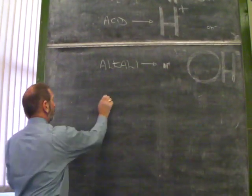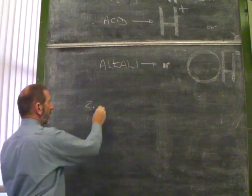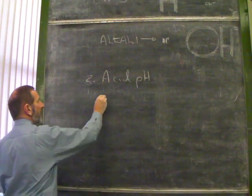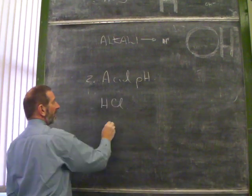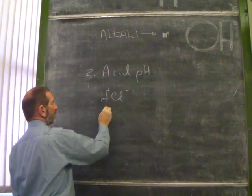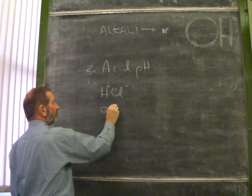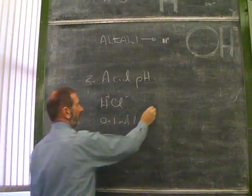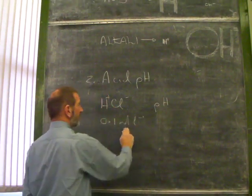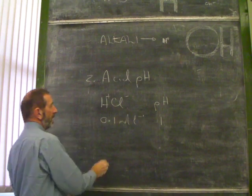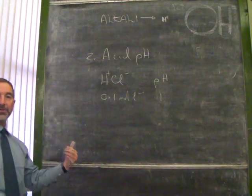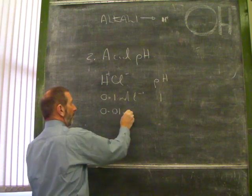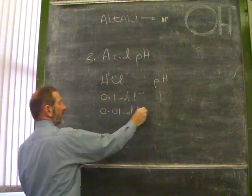Here's another question that you could ask yourselves. Let's look at acid pH. Suppose we had some hydrochloric acid, and let's say the concentration of the acid was 0.1 moles per litre. What would be its pH, I wonder? Well, it comes out that the pH of this acid is 1. If we watered it down by a factor of 10, we had it 10 times less concentrated, until it was 0.01 moles per litre, so 10 times less concentrated,